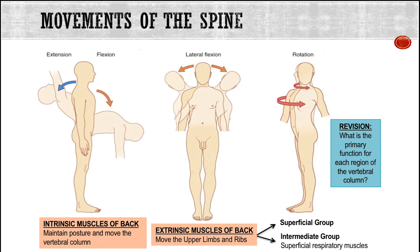The true back muscles are located below the neck and are deep to the posterior thoracic lumbar fascia. Their function is to maintain posture and to allow for and support movement of the vertebral column. Superficial to this, we have the extrinsic muscles of the back, also called the immigrant muscles, which collectively function to move the upper limb and rib. There are two subgroups: the superficial group, which moves the upper limb only — muscles such as the deltoid and trapezius — and the intermediate group, which includes muscles such as serratus posterior inferior and superior, functioning as respiratory or proprioceptive.